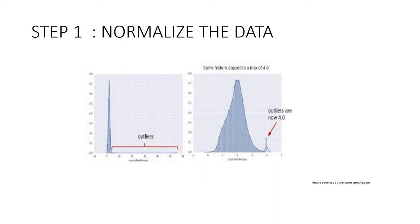If you are familiar with data analysis and processing, normalization of data is the first step. Normalization is a technique often applied as part of data preparation for machine learning. The goal of normalization is to change the values of numeric columns in the dataset to a common scale without distorting differences in the range of values.